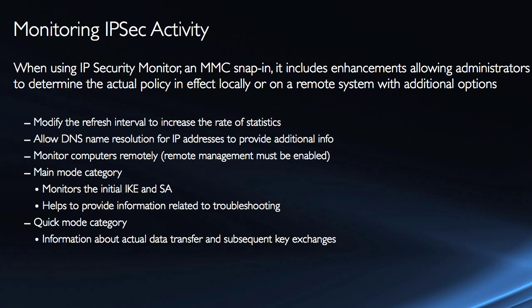There are two categories: main mode and quick mode. Main mode monitors the initial key exchange and security association, helping provide information related to troubleshooting. Quick mode covers information about the actual data transfer and subsequent communication. So using those two categories, you're viewing different types of information. IPSec monitor or the Windows Firewall with Advanced Security snap-in are the two primary locations to monitor IPSec activity.